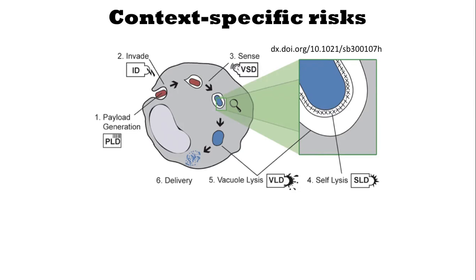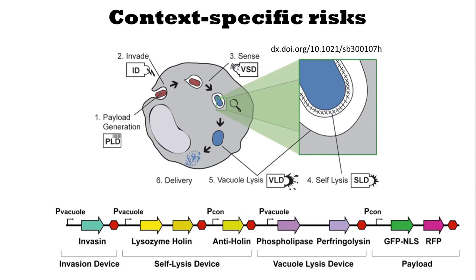Considering context-specific risks, let's look at an example. This is a payload delivery device. Bacteria generates a payload, is capable of invading a cell, sensing that it's in a vacuole, initiating self-lysis, and the self-lysis releases both vacuole lysis proteins and the payload — so it's able to lyse the vacuole and release the payload into the inside of the cell. One of the things we would want to check is what risk group do these sequences come from? We would note that all of these come from risk group 1 organisms, with the exception of invasin and the proteins in the vacuole lysis device. Considering that invasin and the vacuole lysis proteins come from risk group 2 organisms and are virulence factors, we decided that this device, installed in a harmless chassis, should be treated as a risk group 2 organism.